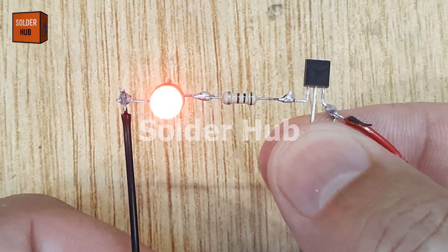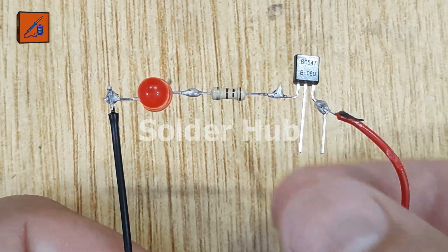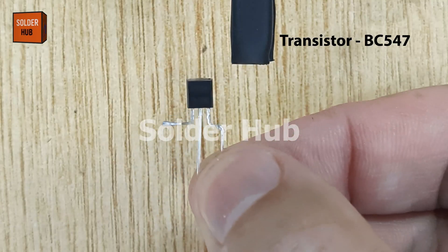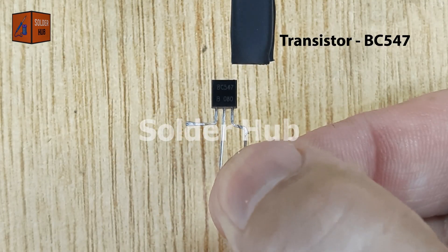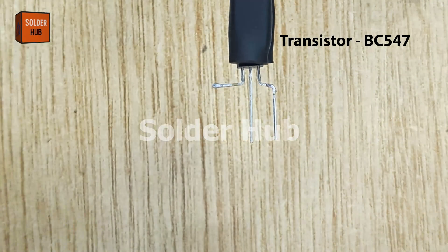In today's video, I'm going to show you how to create a simple and effective touch sensor circuit using a BC547 NPN transistor. This is a fun and beginner-friendly electronics project that demonstrates how a small current from your finger can activate an LED.